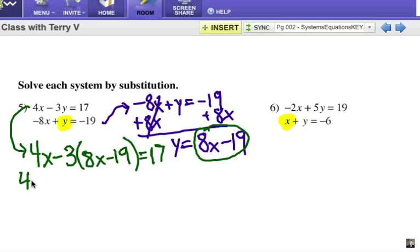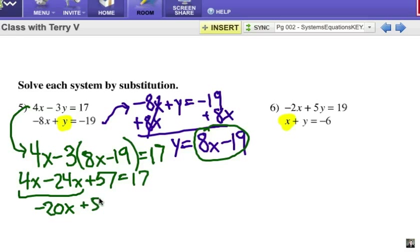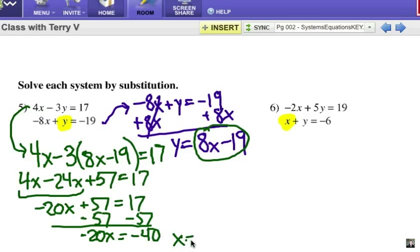So let's solve this out: 4x - 24x - or that's a positive 57 equals 17. We're going to combine my x's together, that'll be -20x + 57 = 17. We're going to subtract 57 from each side. -20x = -40, and x would be, because I divide both sides by -20, x would be a positive 2.